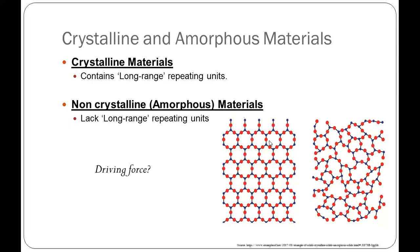On the other end, the second class known as amorphous materials lacks long-range repeating order. If you see this diagram on the left side, you can see that different atoms have arranged themselves in a particular pattern and this pattern continues throughout the structure — that defines a crystalline material. On the other side, there is no order between different repeating units and we don't see any sort of long-range repeating structure throughout the material, which is a particular example of amorphous material.